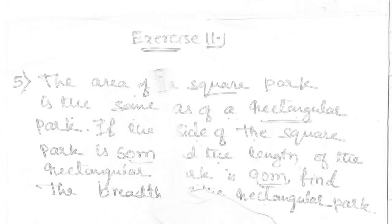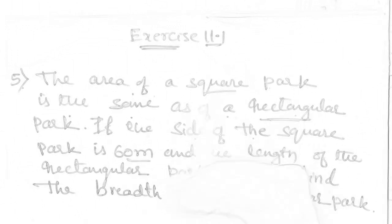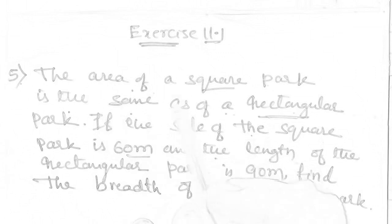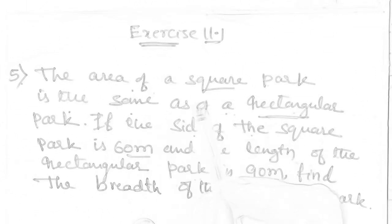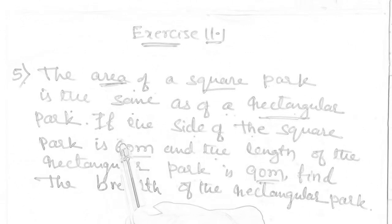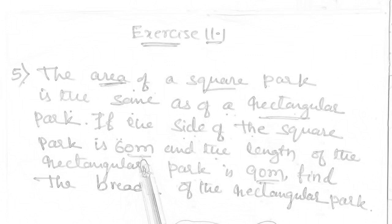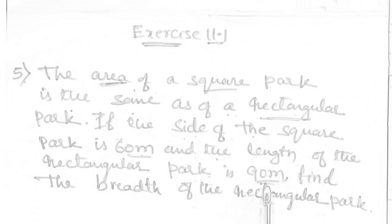See this question — 5th question of 11.1. The area of square park is the same as of a rectangular park. The side of the square park is 90 meters. For a rectangle, we have the length and breadth concept.